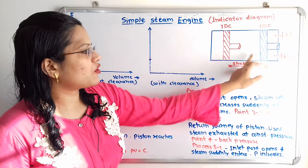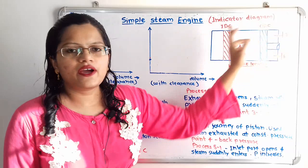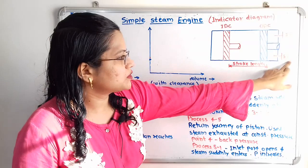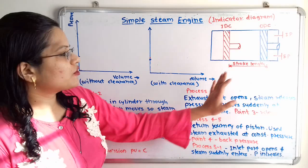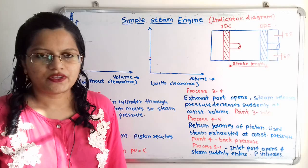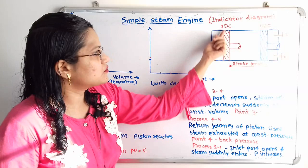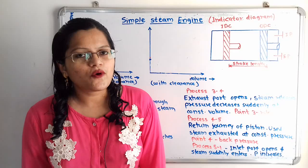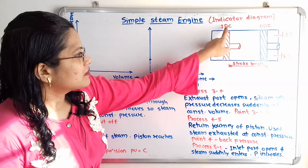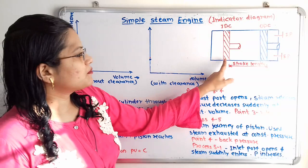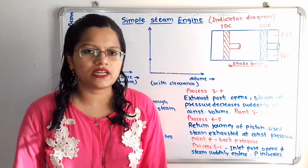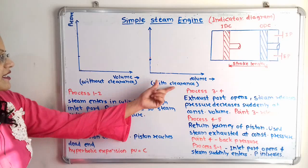This diagram shows the arrangement of the piston and cylinder. Here is the inlet port from where the steam enters inside the cylinder, and here is the exhaust port from where the steam is exhausted. Initially the piston is at the outer dead center, and when steam enters it moves to the inner dead center. The clearance volume is the volume of space between the piston and cylinder cover when the piston is at the inner dead center. The length between inner and outer dead center is the stroke length.